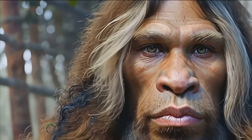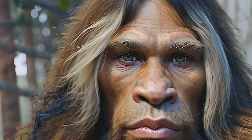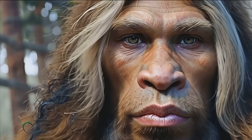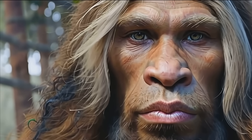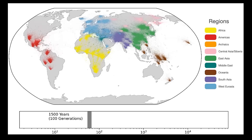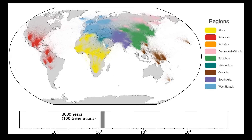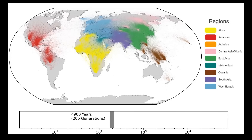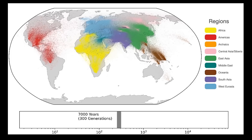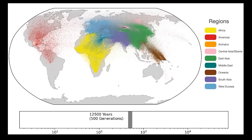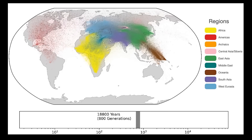Scientists believe that a branch of humanity left Africa around 800,000 years ago and split, after a few hundred thousand years, into Homo sapiens, Neanderthals, and Denisovans. For reasons that are still being debated, the Neanderthals evolved to the west of the Himalayan mountains, and the Denisovans to the east and south, while modern humans remained in their African homeland.